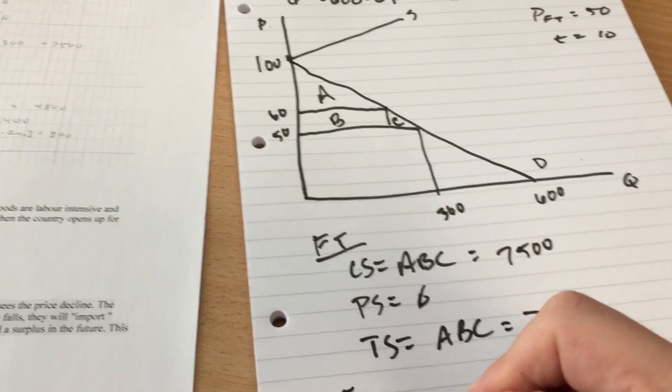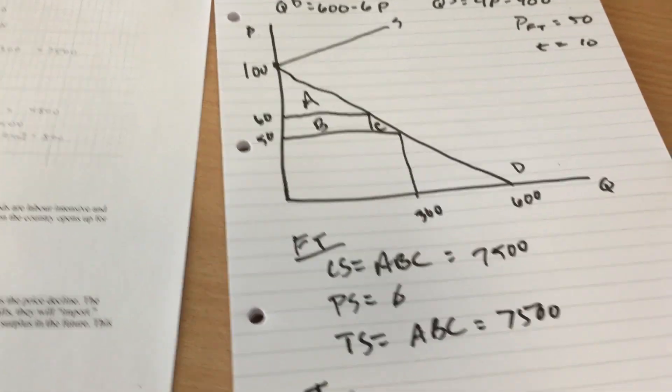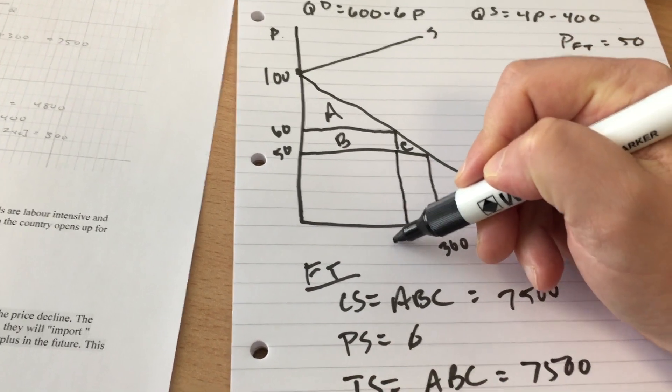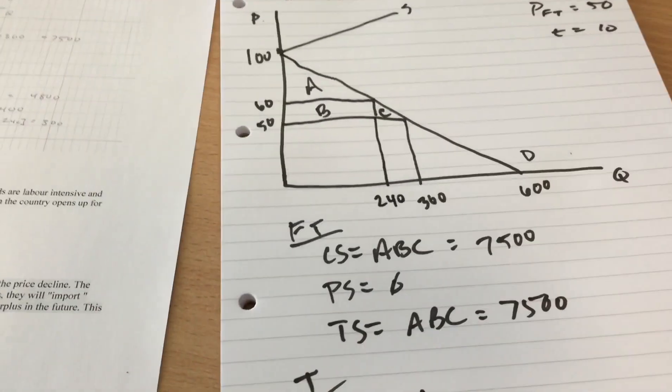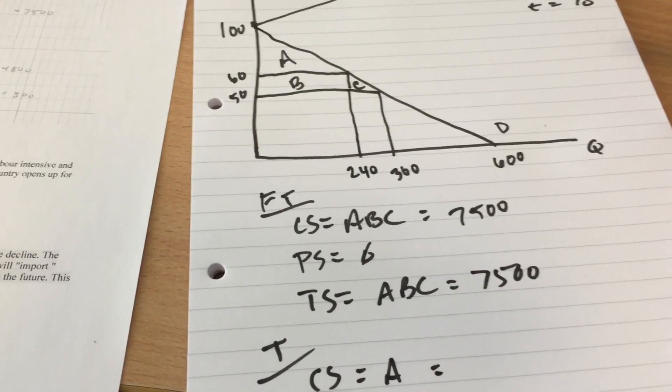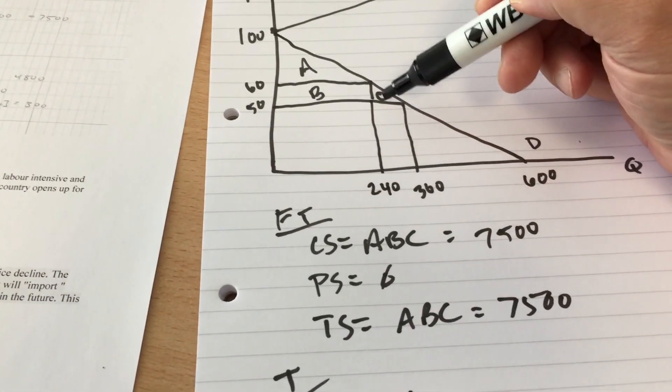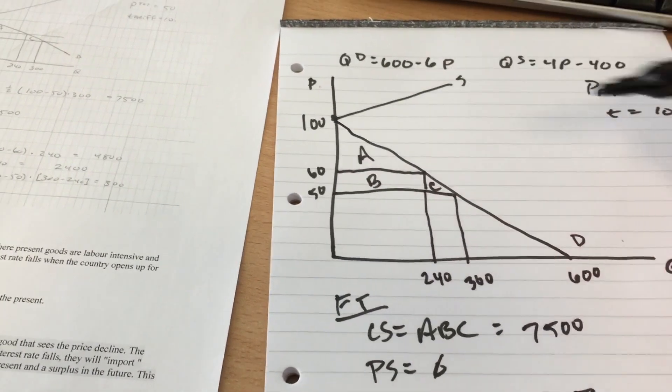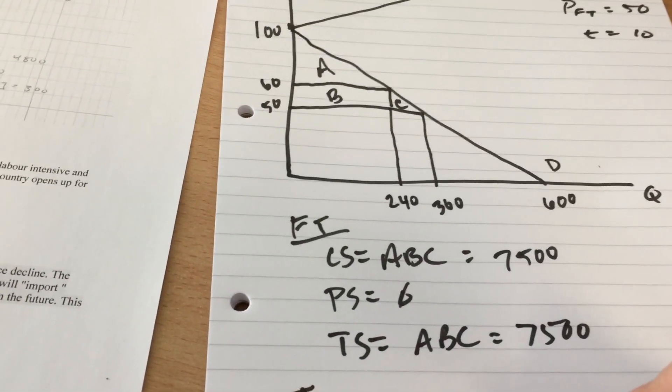We add on the tariff, consumer surplus is going to fall to area A. So when we add on that tariff, the price in our country goes up to 60. We only buy 240 of these ourselves. So consumer surplus is one half the base of 240 times the height of 40, 100 minus 60, for a grand total of 4,800.